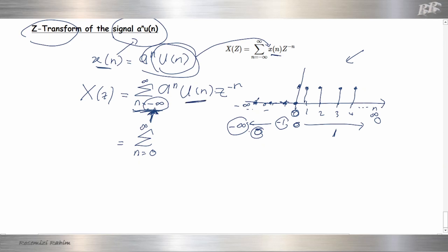For u(n), we know that from 0 to infinity, u(n) is equal to 1. So now our equation will become a^n z^(-n). u(n) becomes 1, so we can replace by 1. Then we know that we can combine a and z. We factor it, n equal to 0 to infinity. When we factor it becomes (a z^(-1))^n.